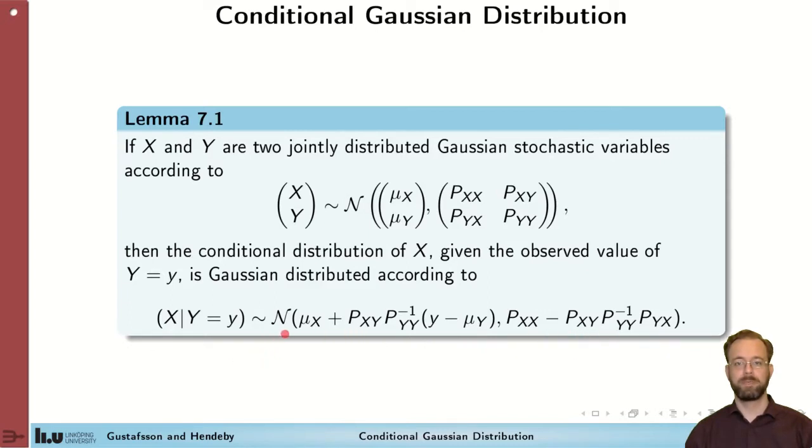We see that the mean is the previous mean plus a compensation due to the difference between the observed and the expected value of Y. And that the covariance becomes smaller when we add information. It's also important to note that the covariance does not depend on the observed value of Y.